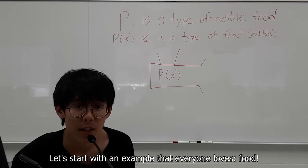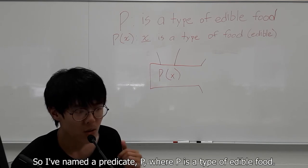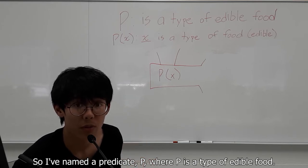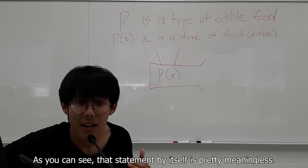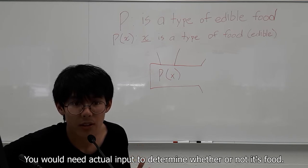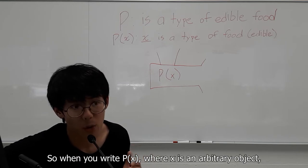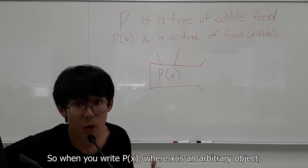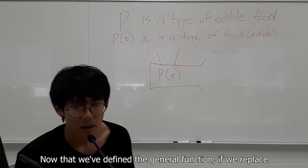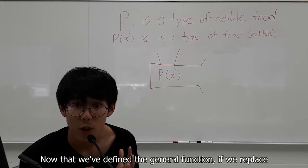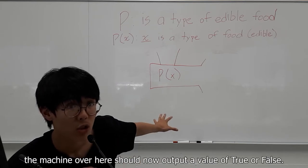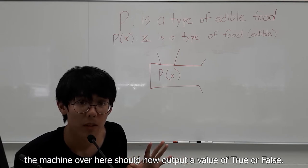Let's start with an example everyone loves. Food. So I've named a predicate P, where P is a type of edible food. So as you can see, that statement by itself is pretty meaningless. You would need actual input to determine whether or not it's food. So when you write P of X, where X is an arbitrary object, X is a type of edible food. Now that we've defined the general function, if we replace anything with X, the machine over here should now output a value of true or false.